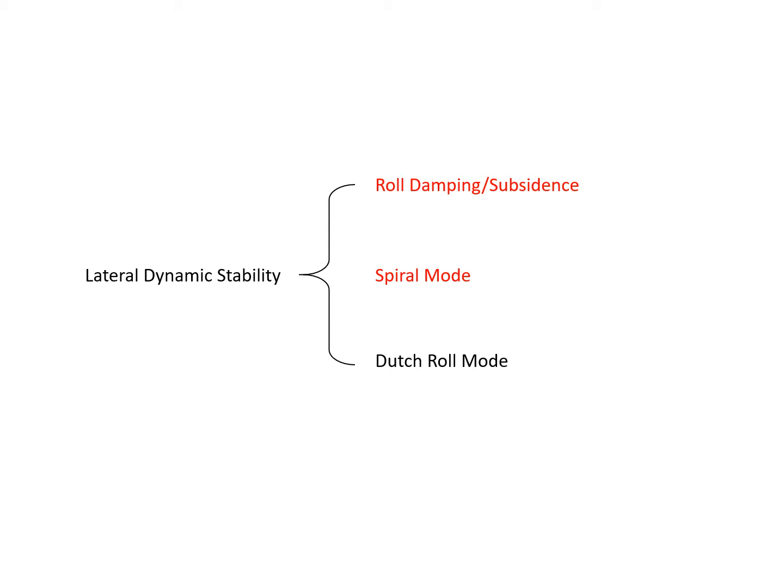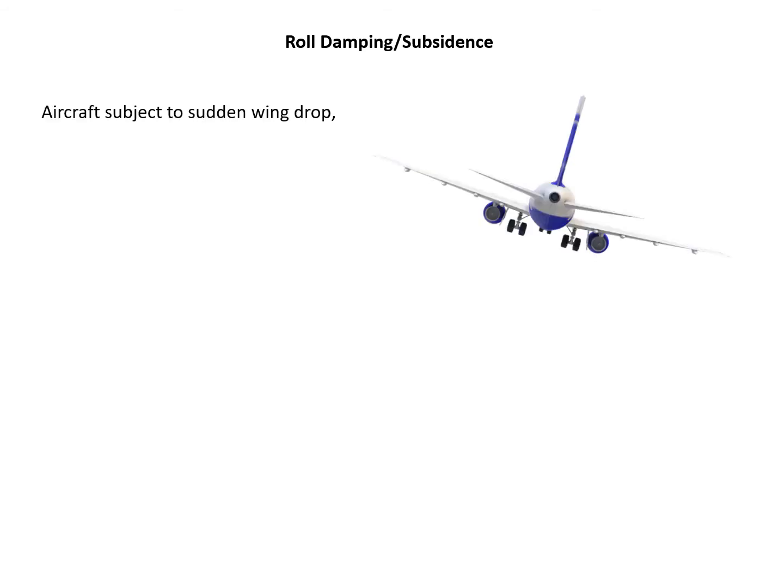We are going to look at firstly the roll damping or roll subsidence. First, let me introduce the concepts about this dynamic mode. Assume an aircraft, we have a rear view of this passenger aircraft, it's subject to sudden wing drop, so the right wing drops down.